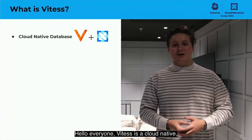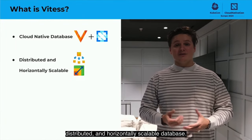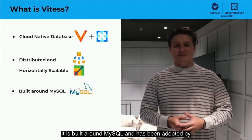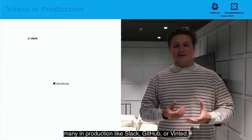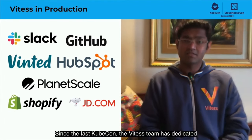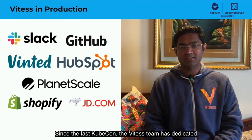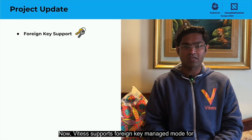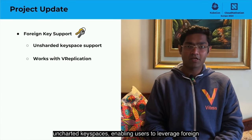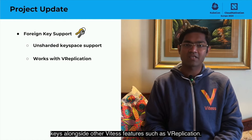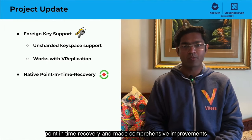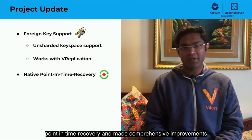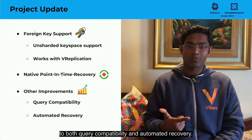Hello everyone. Vitess is a cloud-native, distributed, and horizontally scalable database. It is built around MySQL and has been adopted by many in production, like Slack, GitHub, or Vinted. Since the last KubeCon, the Vitess team has dedicated significant efforts to integrate foreign key support. Vitess now supports foreign key managed mode for unsharded keyspaces, enabling users to leverage foreign keys alongside other Vitess features such as vReplication. Additionally, we have now introduced native support for point-in-time recovery and made comprehensive improvements to both query compatibility and automated recovery.